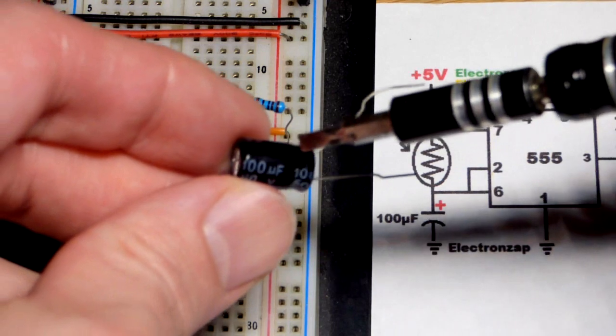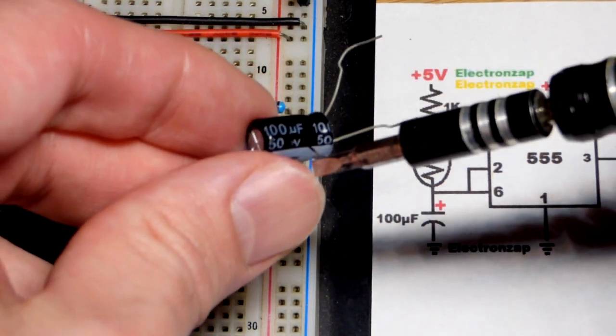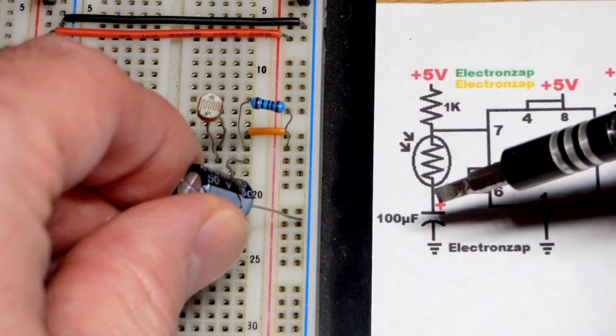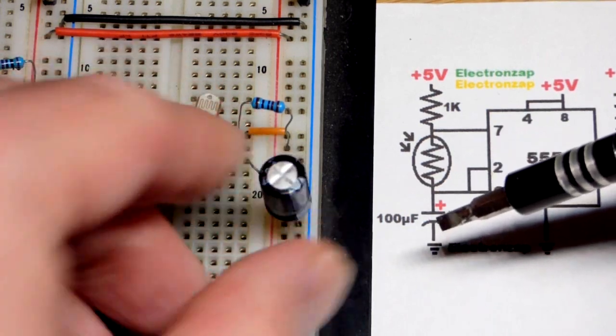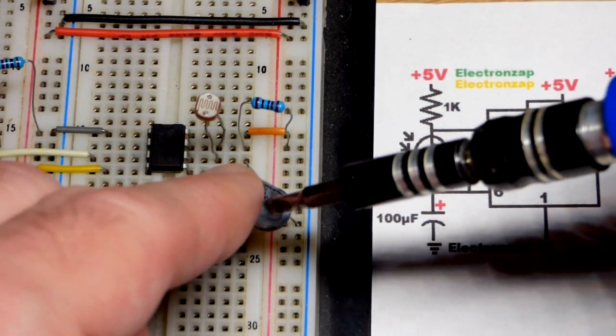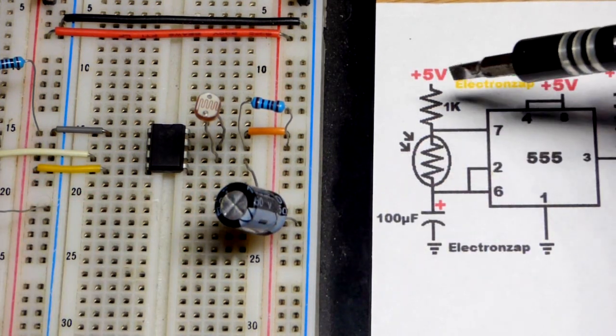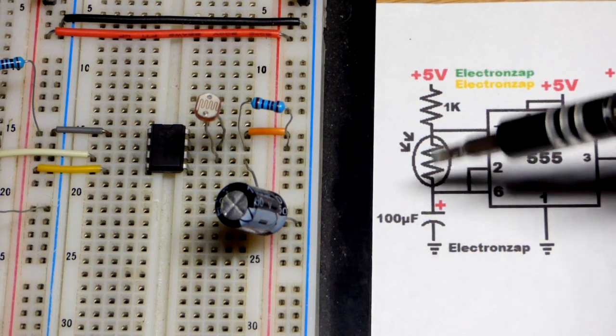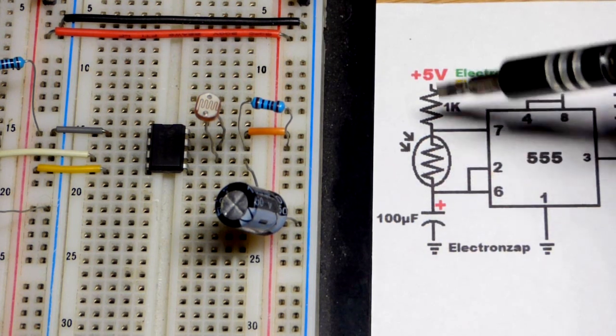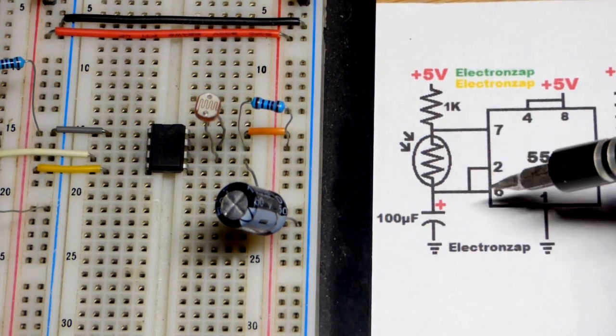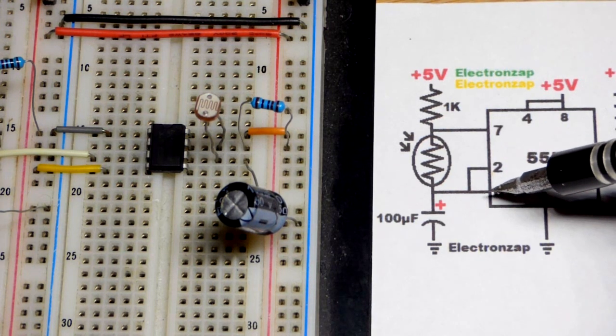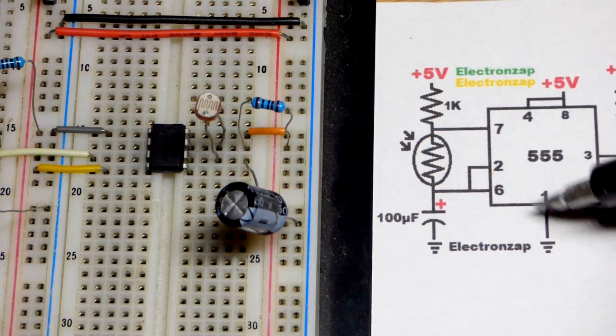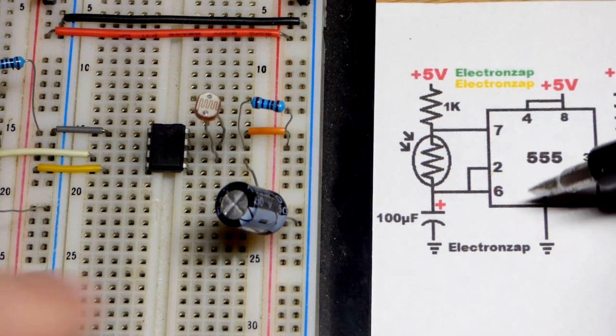So this is a 100-microfarad capacitor, rated up to 50 volts. We're only using five volts for this circuit. That goes to the negative supply. When it's polarized, that side has to be more negative. So when we first apply power, it's going to charge through this resistance. The less light, the more resistance, the longer it takes to charge. Pin number six jumps into action when it gets to two-thirds of the supply voltage, and then it discharges through pin seven.